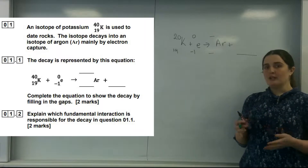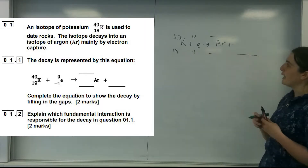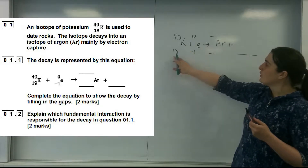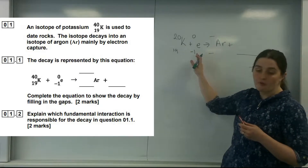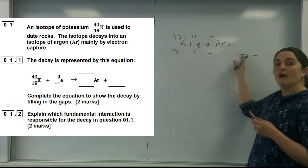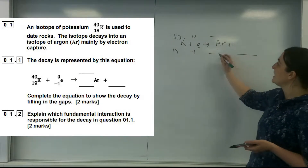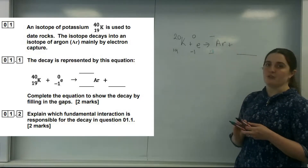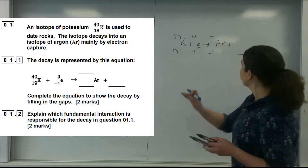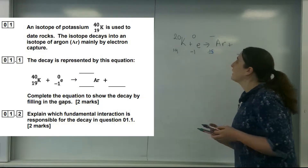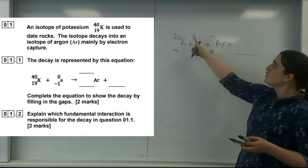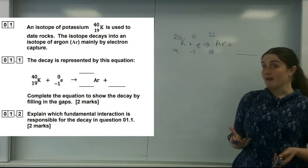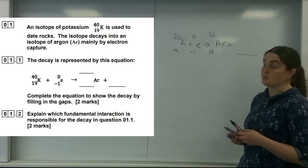Now, if we look at this, things have to balance. When the electron is captured, I've got 19 minus 1, so I've got a total of 18 on this side. I know on this side I also must have a total of 18. Argon does have a proton number of 18. As you can see, the top part — the atomic mass number, so the protons and neutrons — has also not changed.